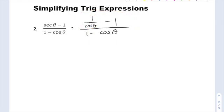I'd like to multiply through by the LCD. If you'd like to make a common denominator with these two, put these two together, that's fine. But I'm going to multiply everything through by the LCD, which is cosine.